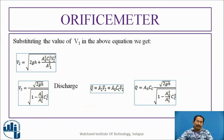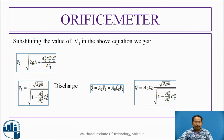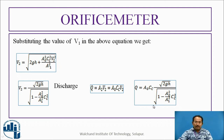Substituting the value of V1 in the above equation, we get V2 = √(2GH + A0²·CC²·V2²/A1²). Simplifying, we get V2 = √(2GH) / √(1 − A0²·CC²/A1²). The discharge formula Q = A1·V1 = A2·V2, where A2 = A0·CC, and V2 is √(2GH) / √(1 − A0²/A1² · CC²).